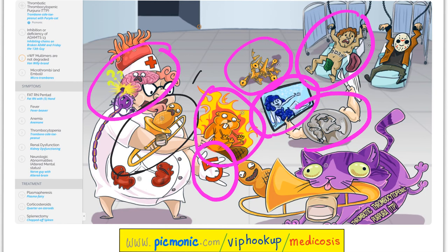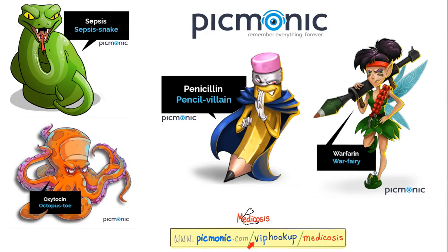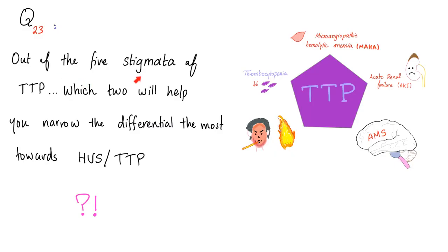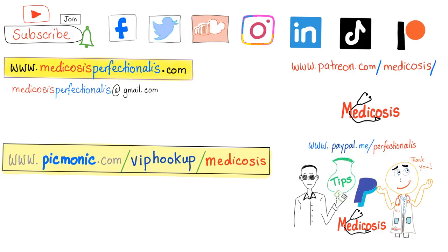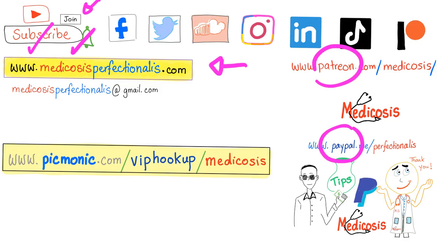This was Picmonic — go to picmonic.com/viphookup/medicosis to try them for free. Question of the day: out of the five stigmata of TTP, which two will help you narrow your differential diagnosis the most towards TTP versus HUS? Let me know in the comment section — the answers will be in the next video. Thank you for watching. Please subscribe, hit the bell, and click the join button. Go to my website for my anti-cancer pharmacology course and antibiotics course. As always, be safe, stay happy, and study hard. This is Medicosis Perfectioneros, where medicine makes perfect sense.